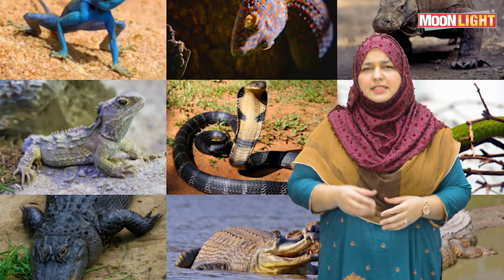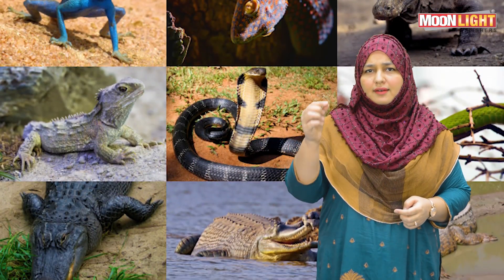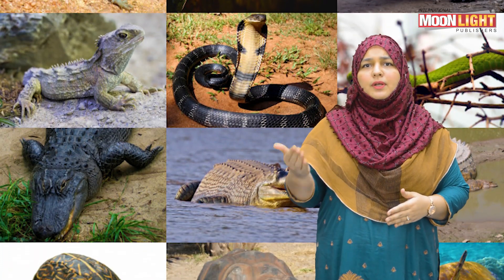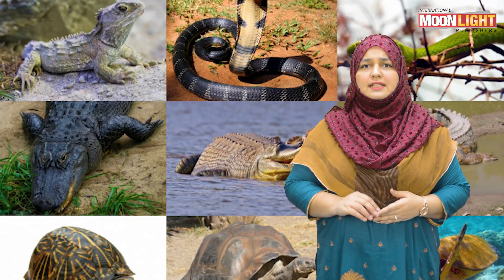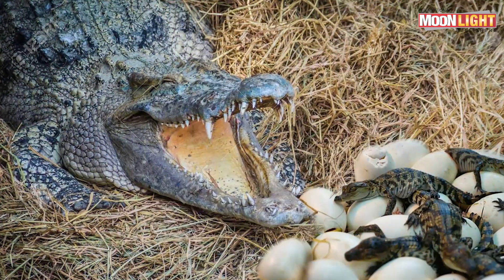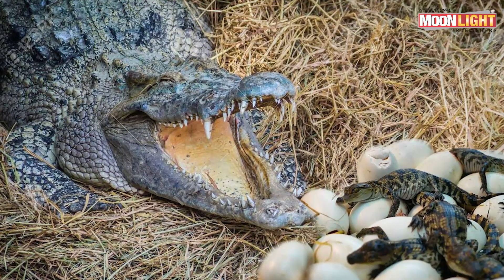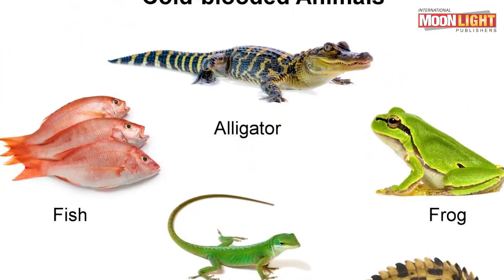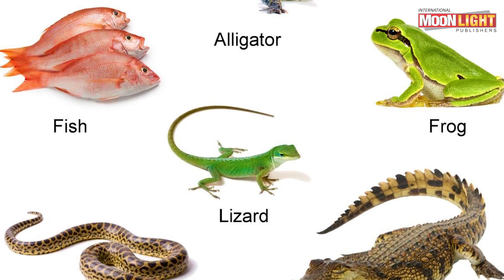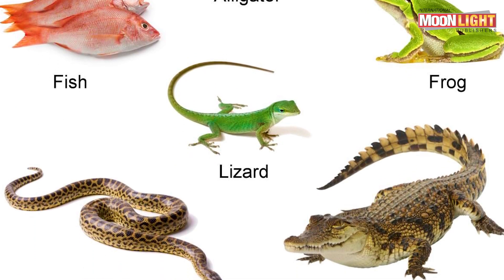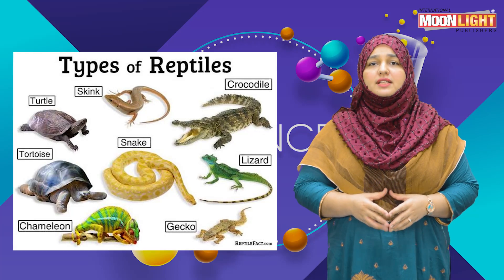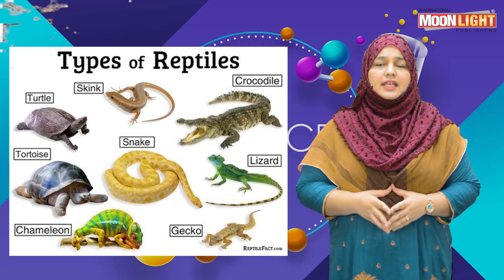Reptiles are animals whose skin is rough and scaly. They are found both in water and on land — just like a crocodile, which is mostly found in water. These animals lay eggs and they are cold-blooded animals, meaning they change their body temperature according to their surrounding temperature.